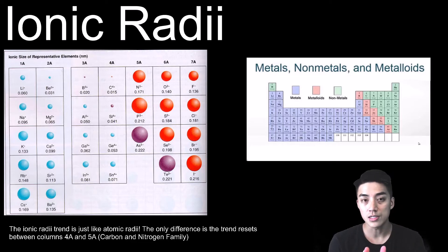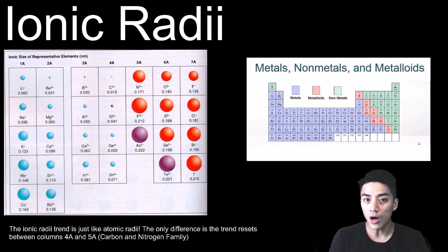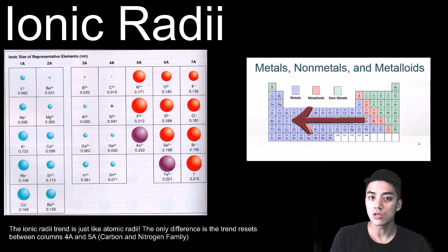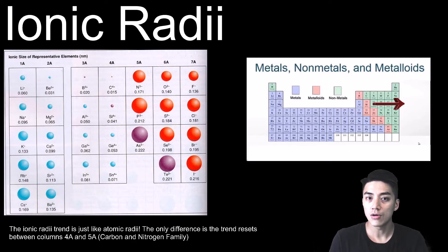Remember there's a staircase on the periodic table. Anything to the left of the staircase is a metal, and metals tend to lose or give up electrons — and when you give up electrons, you shrink. If you're to the right of the staircase, you are a nonmetal, and nonmetals tend to gain electrons. And when you gain electrons, you get bigger.